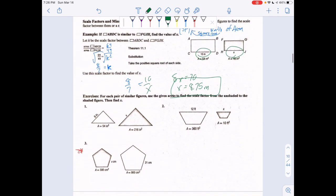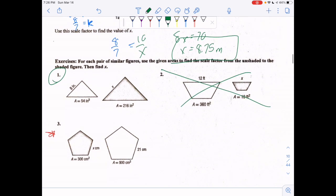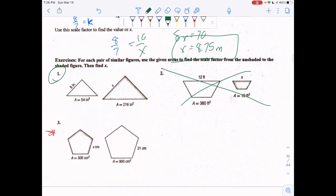Those are the examples of going backwards. I'm gonna do example 1, you do example 3. Let's read the question: for each pair of similar figures, use the given area to find the scale factor from the unshaded to the shaded figure. I believe this is the shaded one.